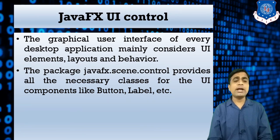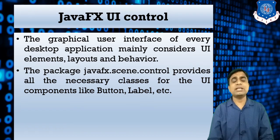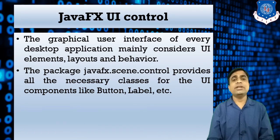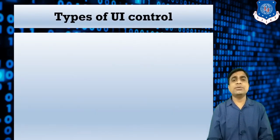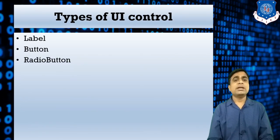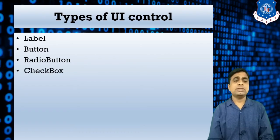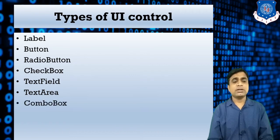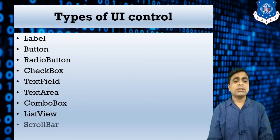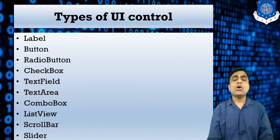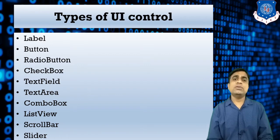That package provides all the necessary classes for UI components like button, label, text, radio button, and different other classes. The different components I will explain in this video are: label, button, radio button, checkbox, text field, text area, combo box, list view, scroll bar, and slider. I will explain all these UI controls with live programming.